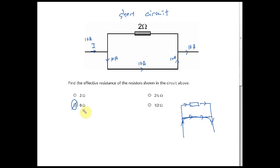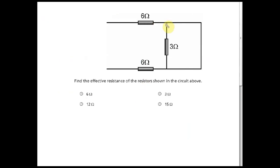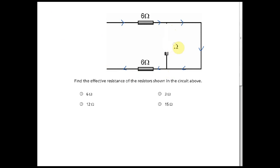The effective resistance in a short circuit is zero ohm. In this circuit, there is a short circuit: all current flows one way, none flows down. So those resistors carry no current — it is as if they don't exist and can be erased from the circuit.